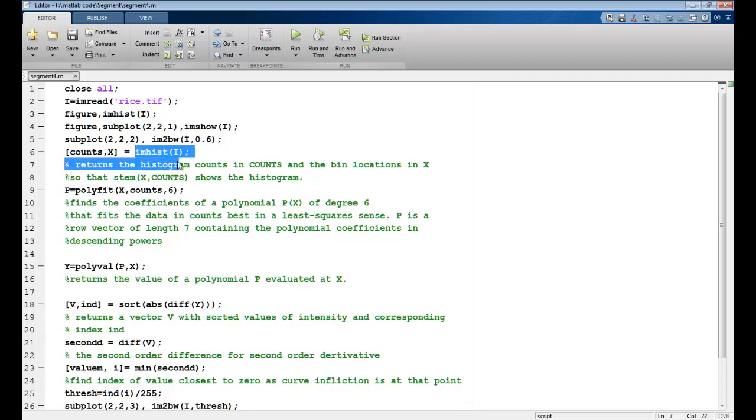Now once I read this histogram, this imHist returns the histogram counts in counts and it returns the bin locations in x. So since my image is a grayscale image, the values of x would vary from 0 to 255 and counts would give me the number of pixels for that particular intensity value.